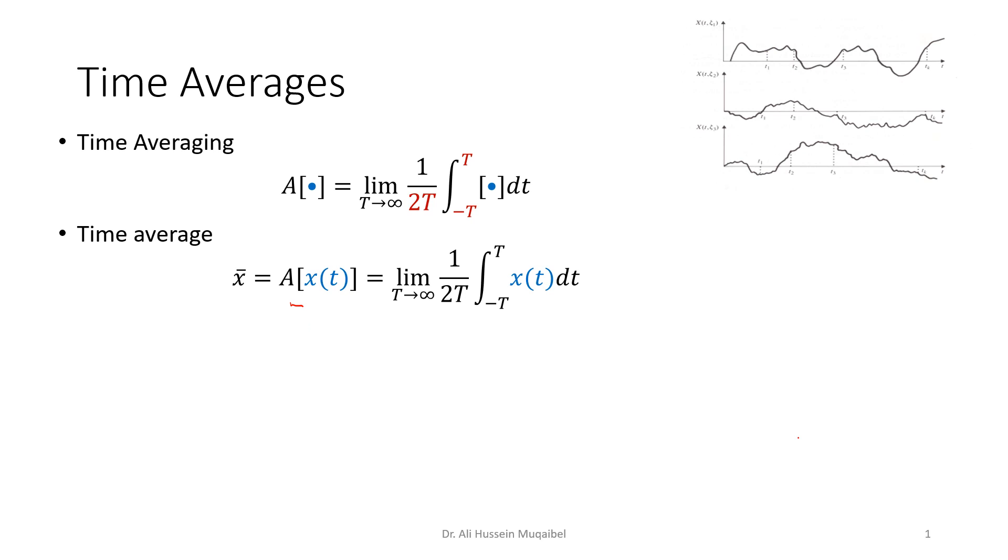So going back to where we are, this defines the time average. If you compare this with the mean or ensemble average, the ensemble average was defined as: given the PDF or the probability, we weight the values x by that probability and then average over all possibilities. Remember, the mean or ensemble average of a random process is a function of time in general.